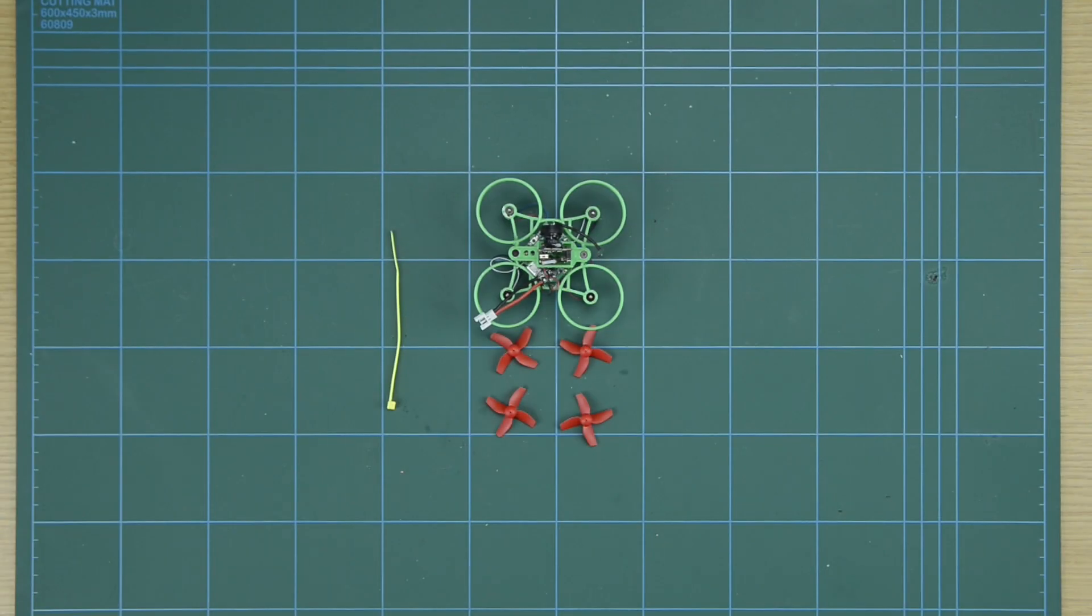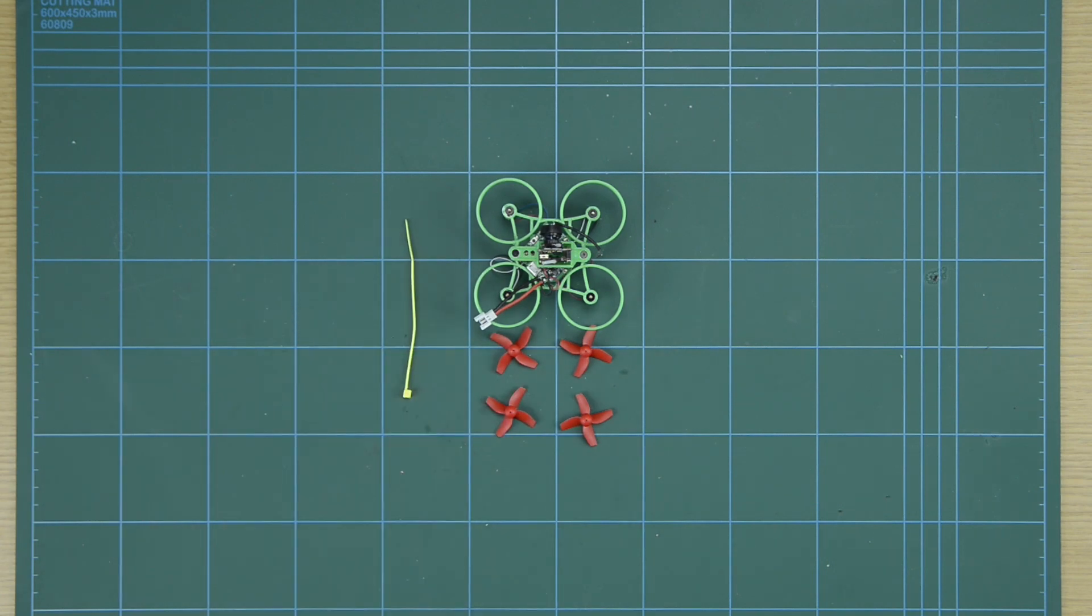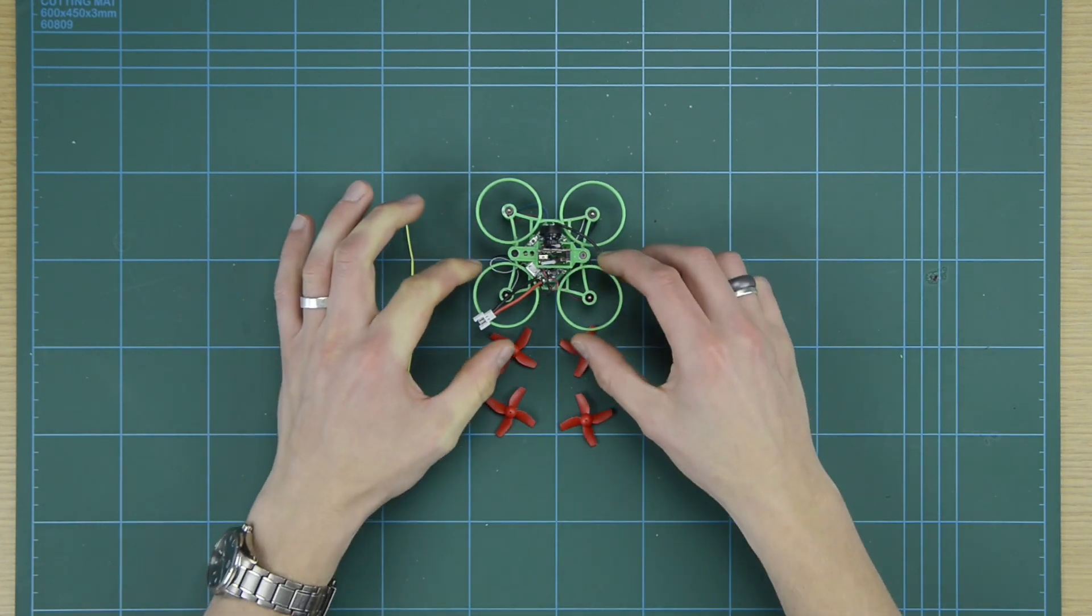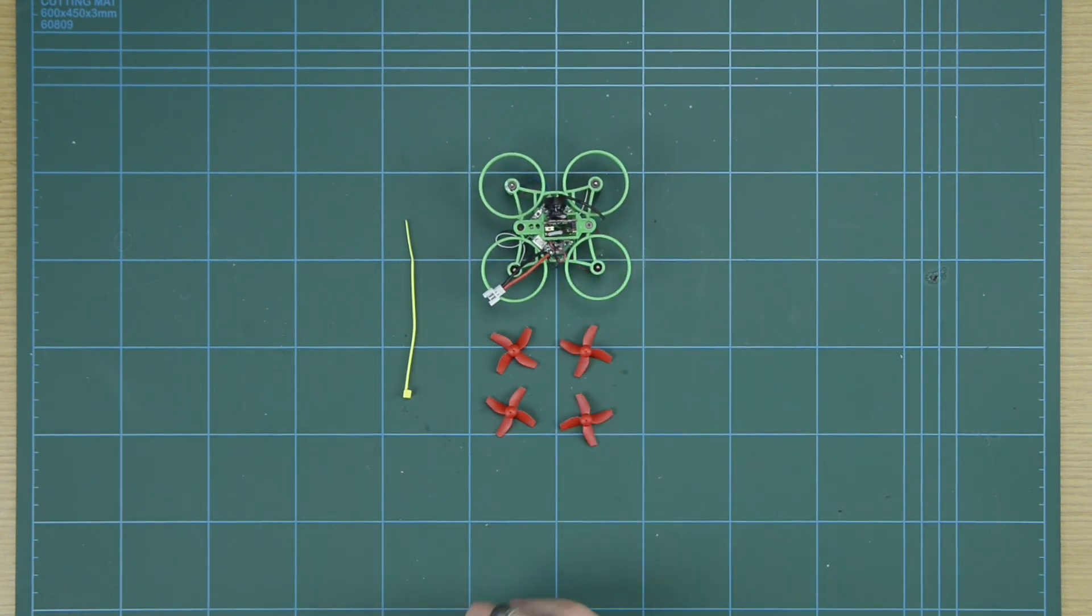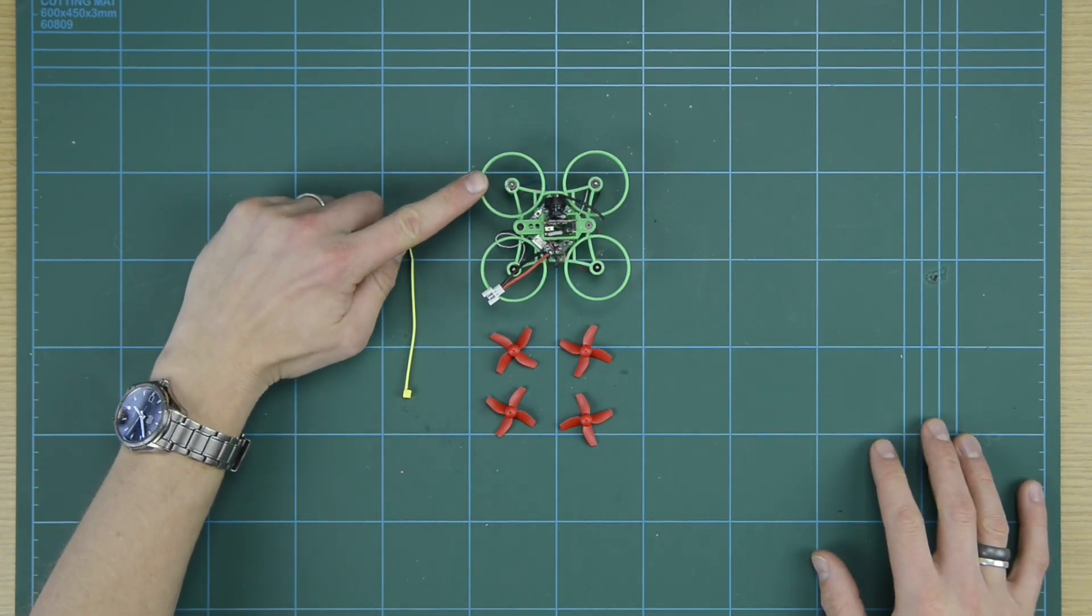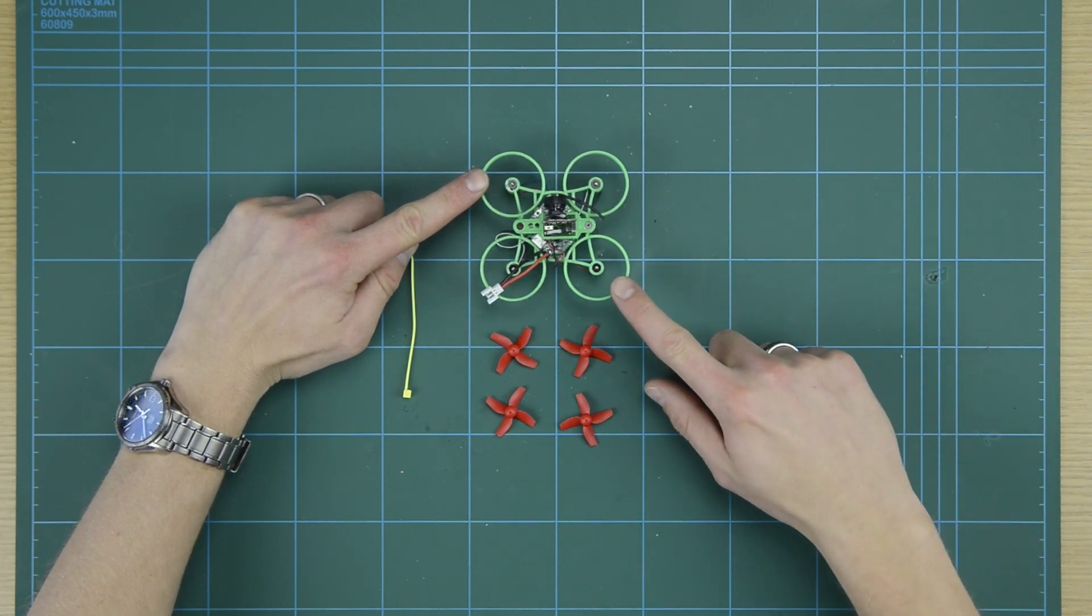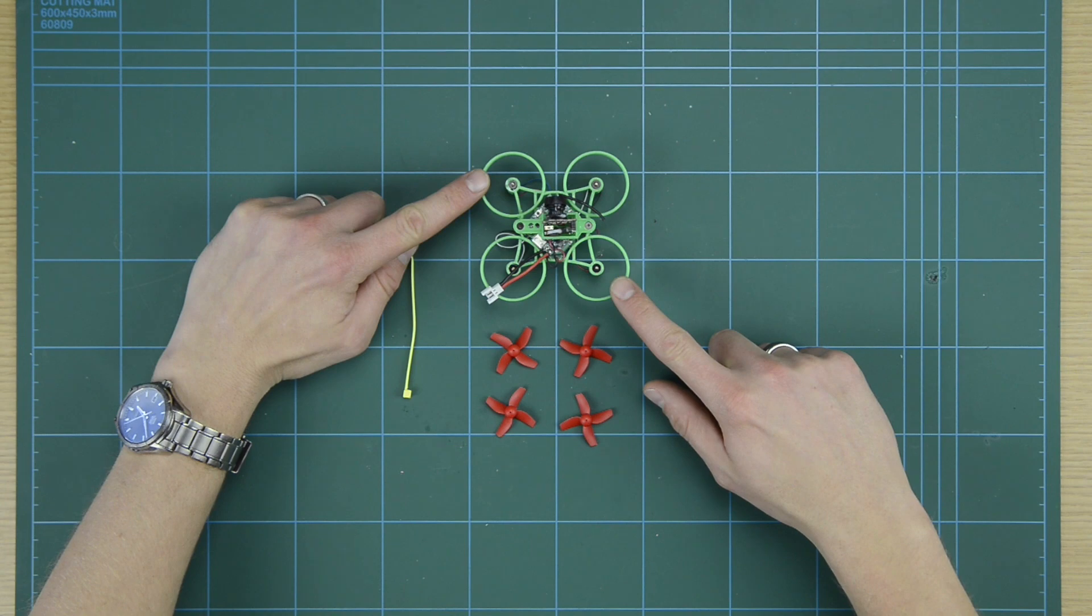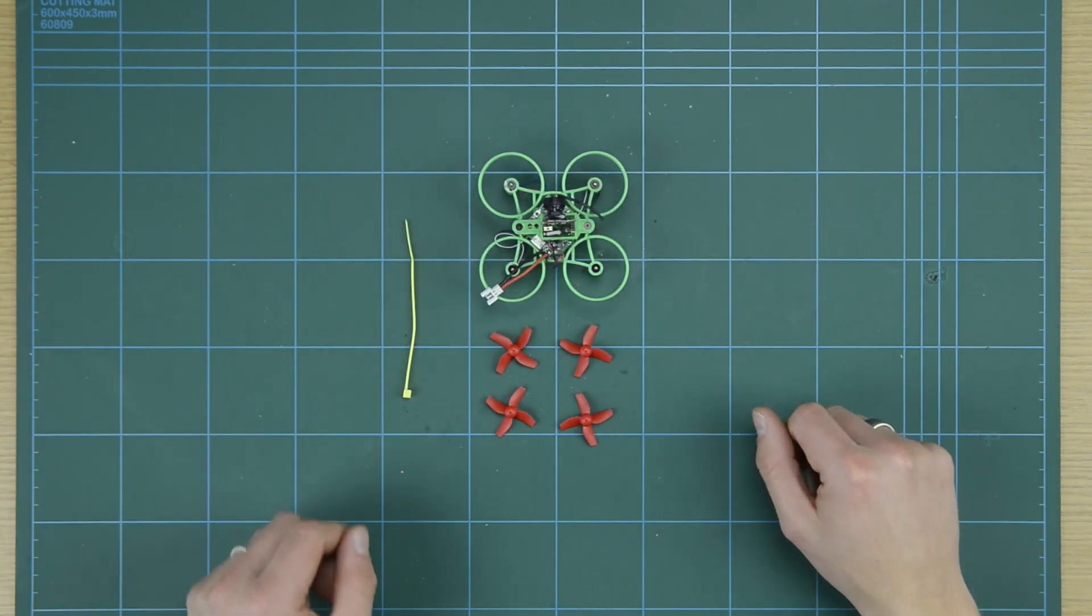The last job for us to do is to fit the propellers and we're also going to fit a cable tie, which is going to be our battery retainer. And so it's important to get the correct propeller in the correct position on your drone. You have clockwise and counterclockwise propellers. And we need a clockwise propeller in the front left and back right, and a counterclockwise propeller in the front right and back left. The same as the motors earlier when we were choosing where to put the clockwise and counterclockwise motors.